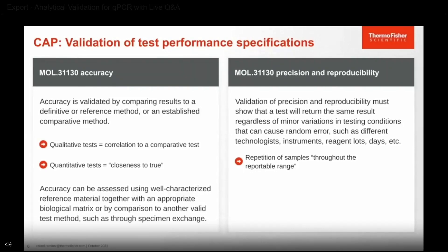In terms of precision and reproducibility, it must show that the test will return the same result regardless of minor variations in testing conditions that cause random error, such as different technologists, instruments, reagents, and even days. It's important to have enough repetition of samples throughout the reportable range to establish this.